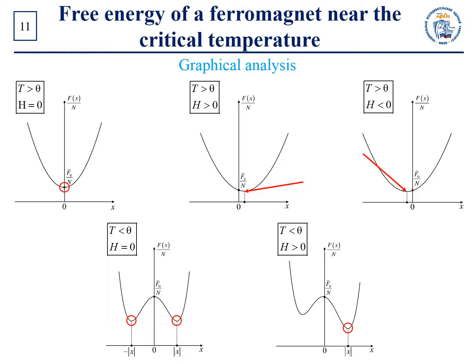Now, if the magnetic field tends to zero, the macroscopic system remains in the state corresponding to this deeper minimum, since the probability of tunneling through the barrier is very low. Note that we analyzed the case when temperature tends to theta from the left. However, such pictures are qualitatively valid in the whole range of temperatures from zero to theta, but the barrier becomes higher at lower temperatures.